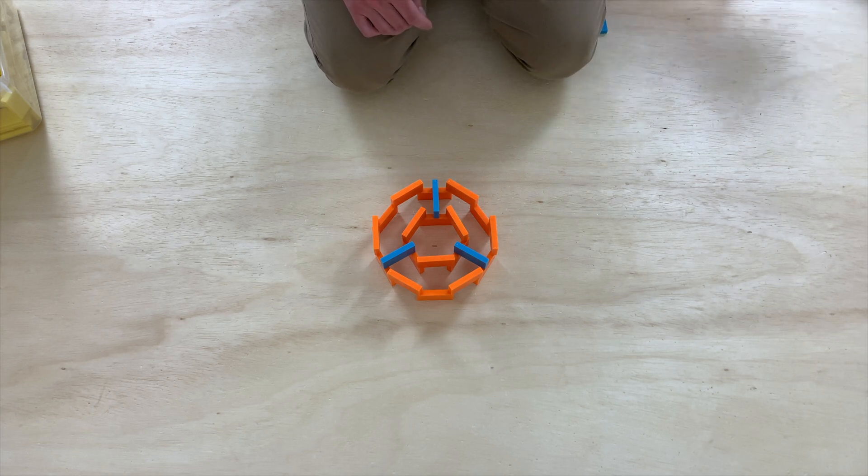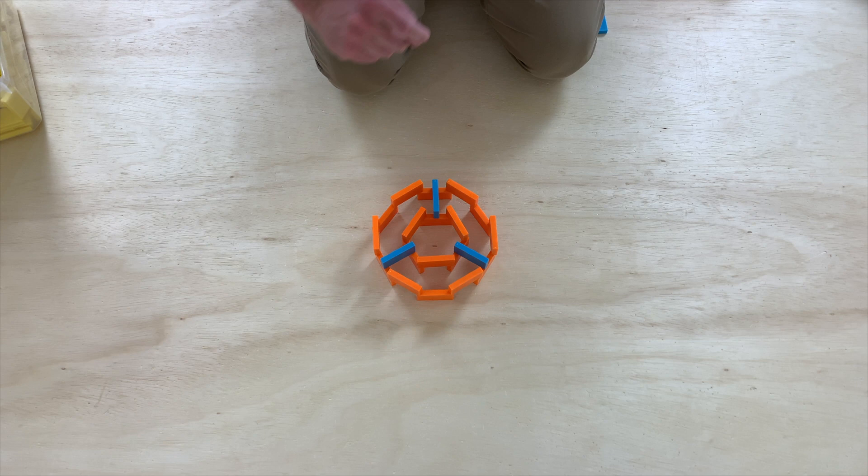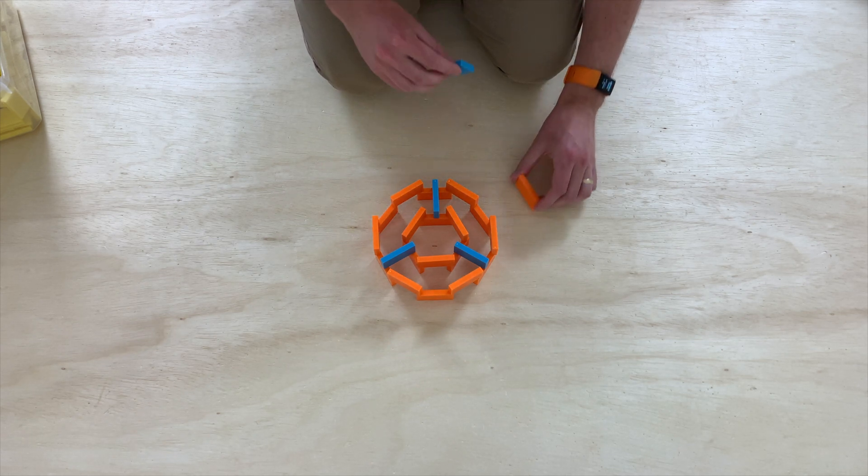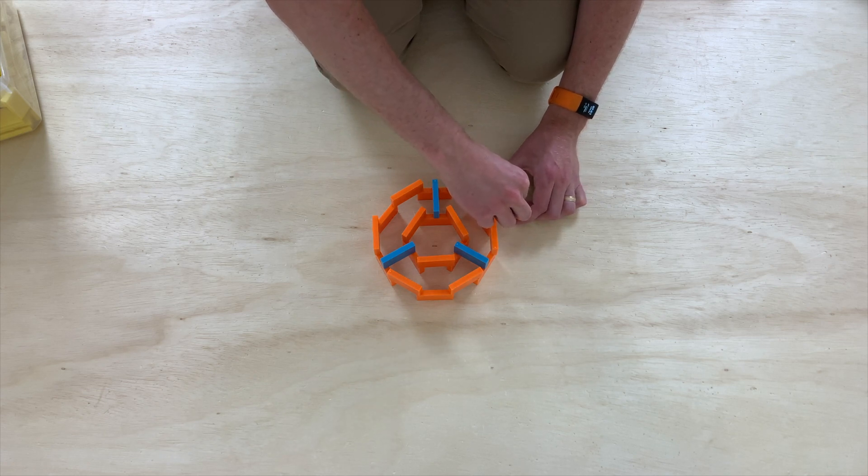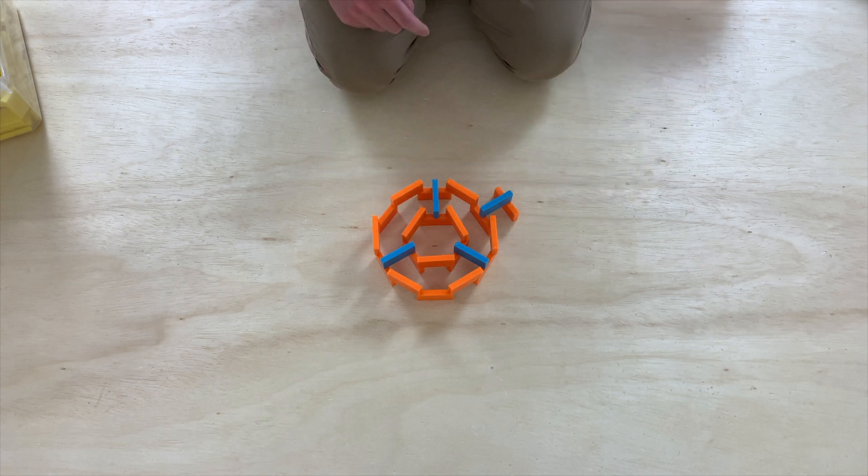And the way that I'm going to measure this out is you'll see that there are three orange dominoes that are on the ground that don't have a blue domino on top of them. So I will measure out the next circle by putting a blue domino here to get the correct distance. And I'll do that for every single one of the orange dominoes that is touching the ground and does not have a blue domino on top of it.